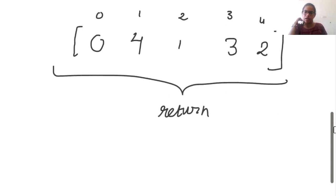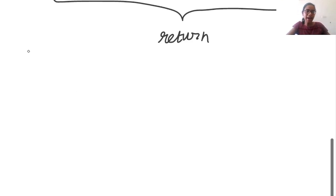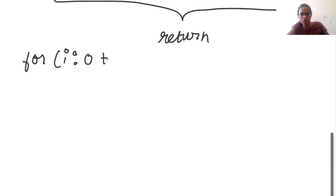To implement this, we will use vectors as well as iterators in C++. Let me write the pseudocode. We have a for loop that will run for i equal to 0 to n, where n is nums.size().